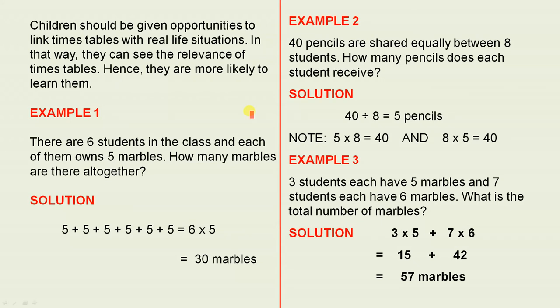Example 1. There are 6 students in the class, and each of them owns 5 marbles. How many marbles are there altogether? Now, the solution. There are 6 students, each of them owns 5 marbles. So we've got 1, 2, 3, 4, 5, 6. That's the same as 6 times 5. 6 lots of 5, that gives you 30 marbles. So there's a perfect example of how we use times tables.